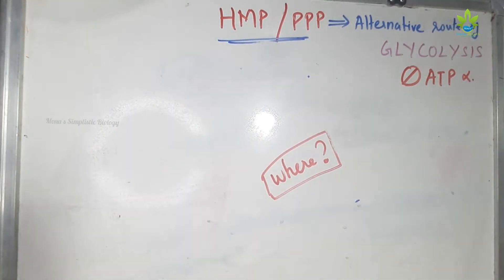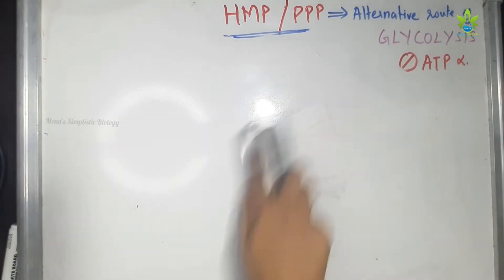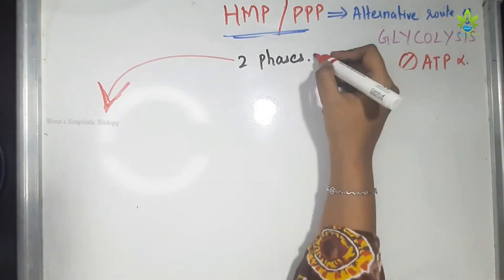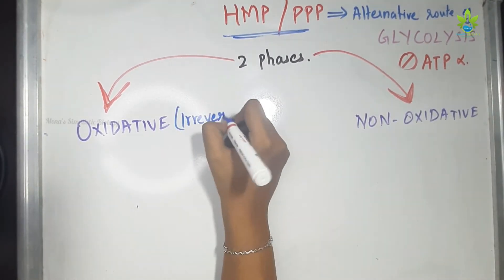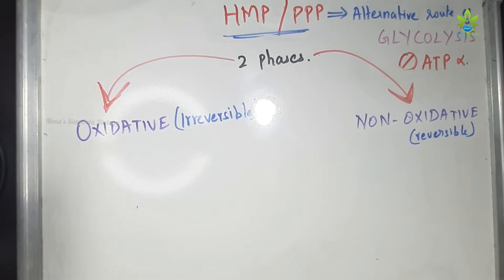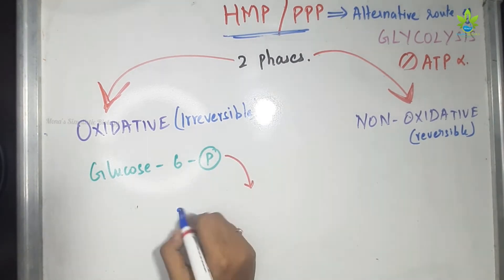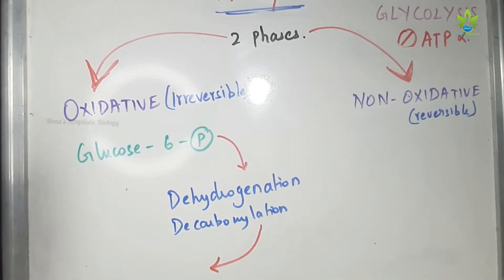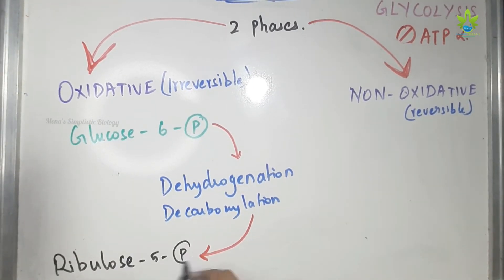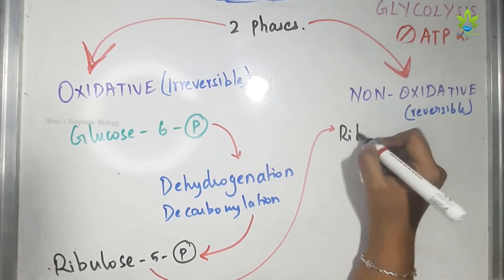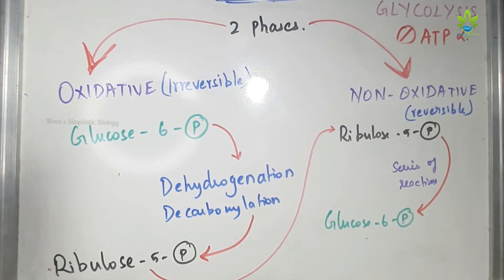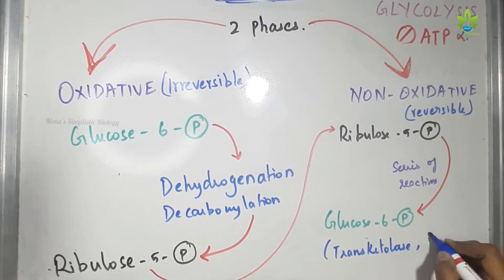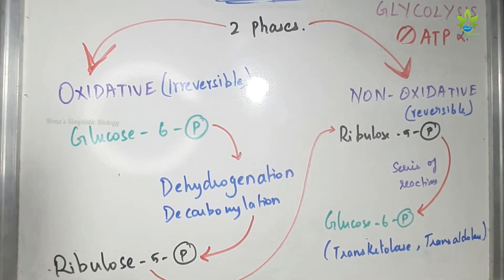This pathway occurs in the cytosol. The HMP has two phases: the first phase is the oxidative phase and the second phase is the non-oxidative phase. The oxidative phase is irreversible. In the oxidative phase, glucose-6-phosphate undergoes dehydrogenation and decarboxylation to form ribose-5-phosphate. In the non-oxidative phase, ribose-5-phosphate is converted back into glucose-6-phosphate through a series of reactions, involving two enzymes: transketolase and transaldolase.